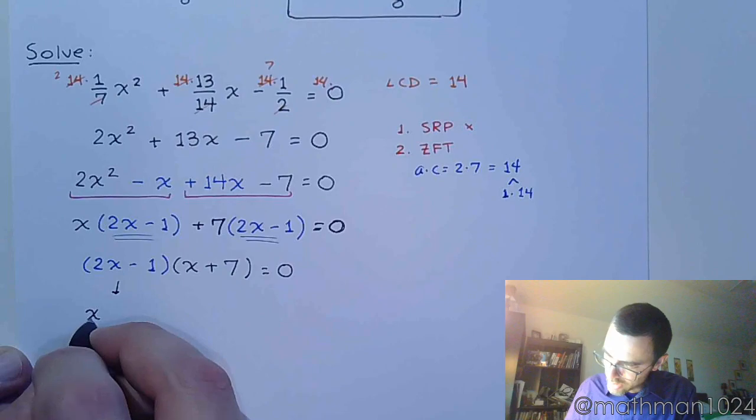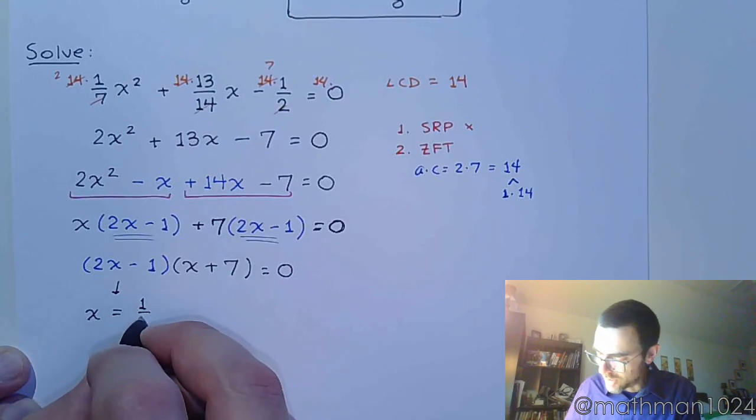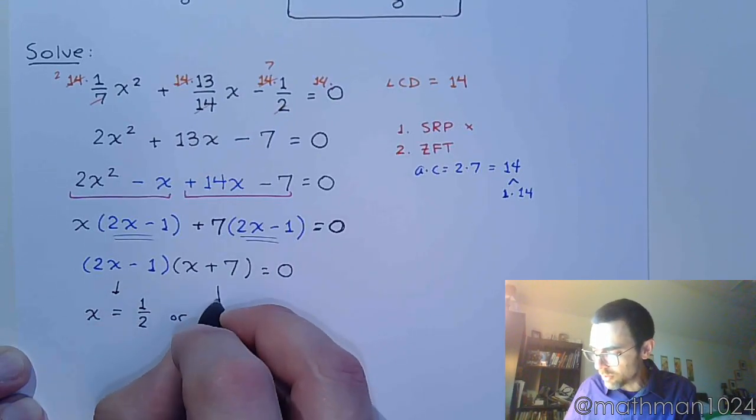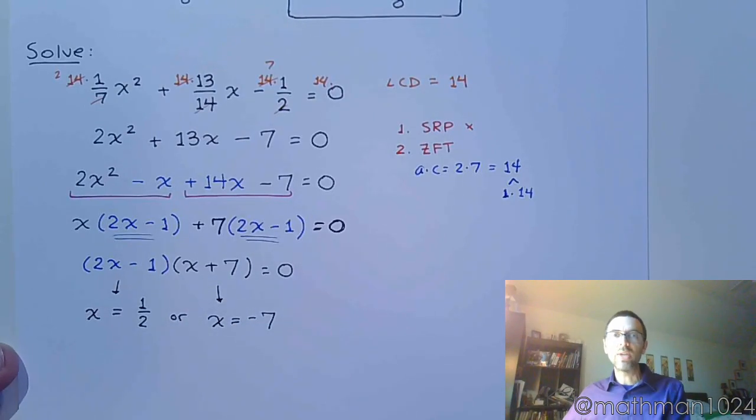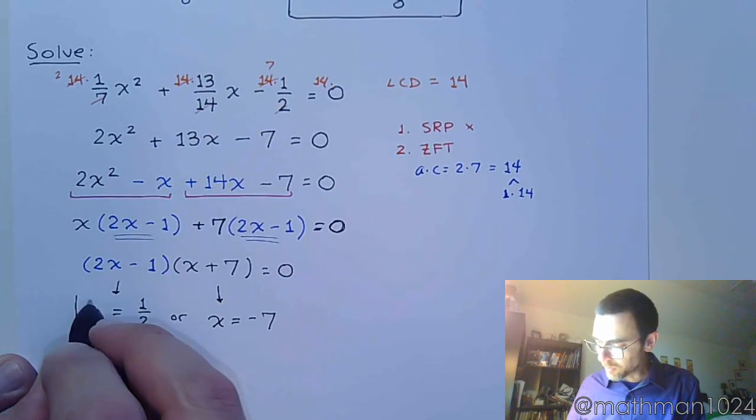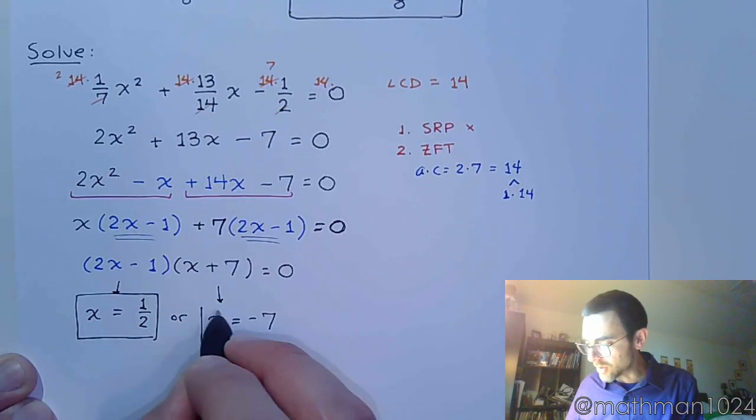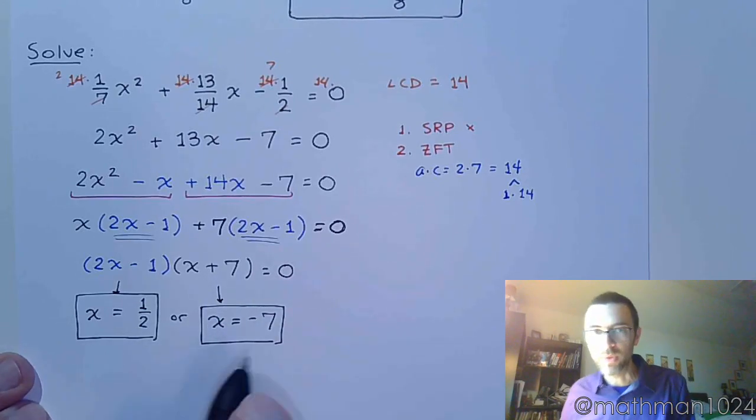So from here, x is equal to 1 half, or from the other factor, x equals negative 7. So you get two nice rational answers. So I say, if you can factor, that is really the best way of doing it.